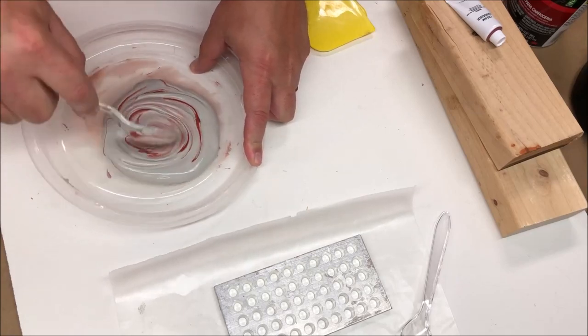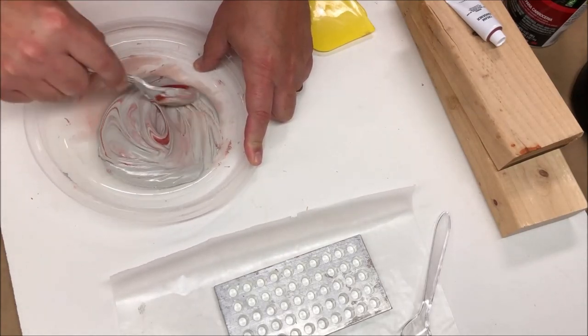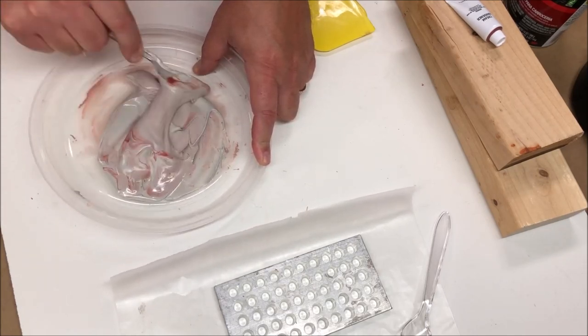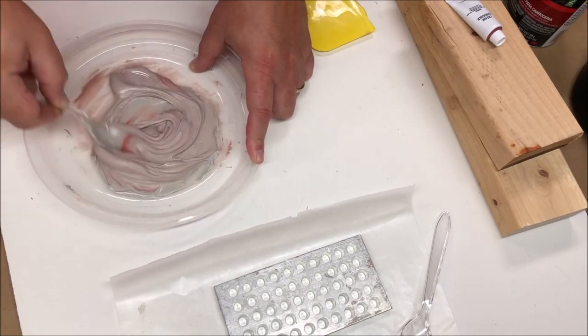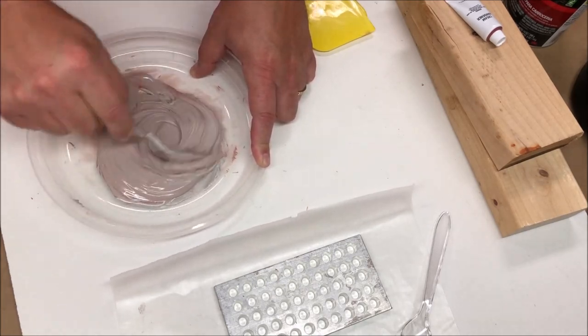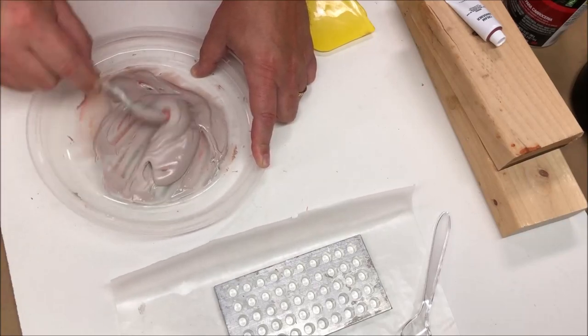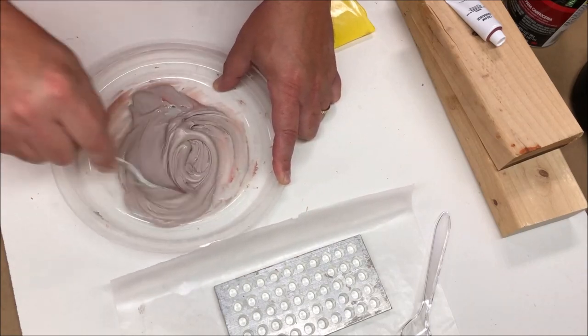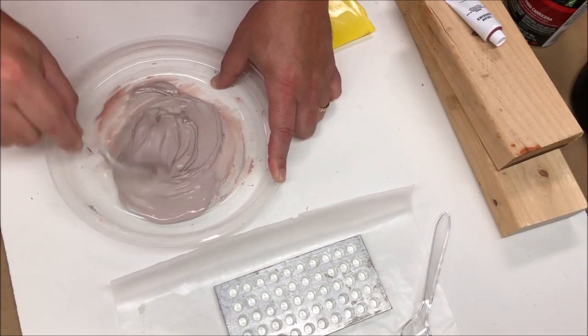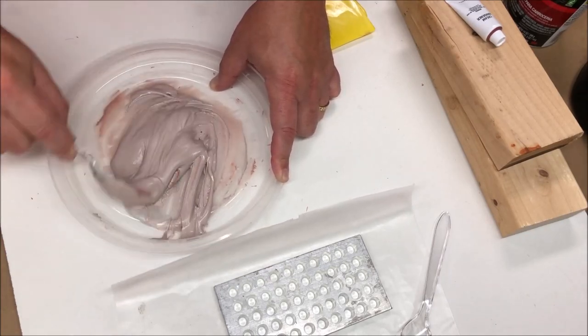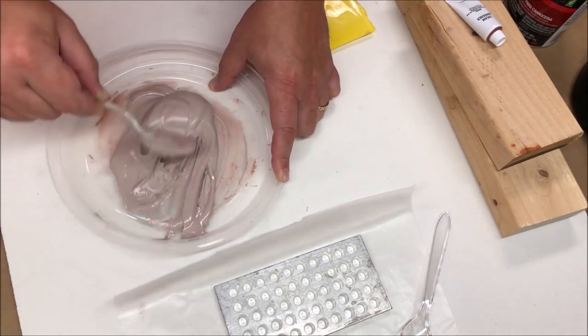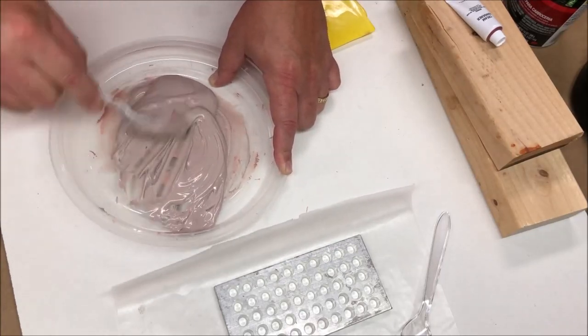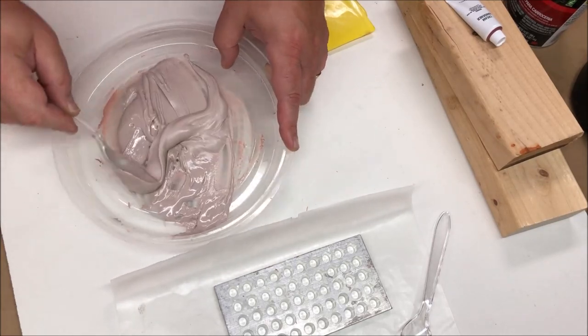Then you start mixing this together. Once you start mixing, it's time to start working quick because this is a chemical reaction and this material is starting to cook off. It'll get warm actually and start to become the compound resin that hardens up. What you're looking for is a nice even grayish pink color. You don't want to see any streaks of hardener in it.